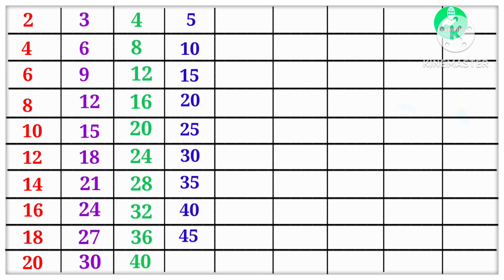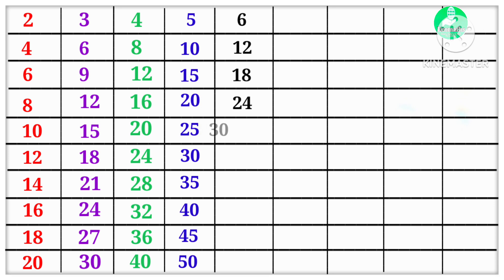5 10s are 50. 6 1s are 6, 6 2s are 12, 6 3s are 18, 6 4s are 24, 6 5s are 30, 6 6s are 36, 6 7s are 42.